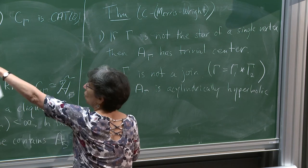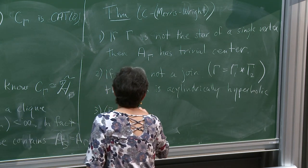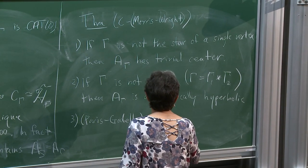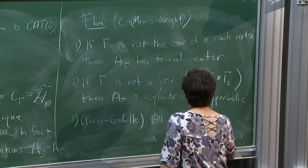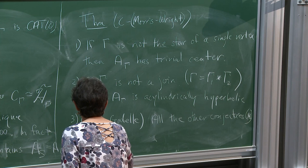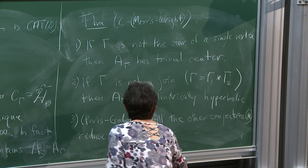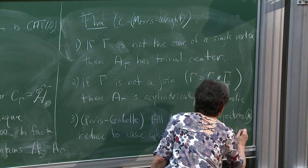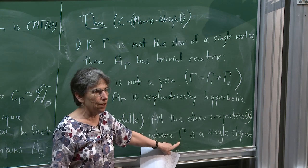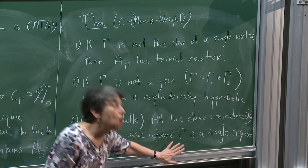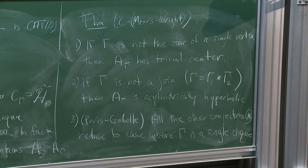And three — already in the Paris and Goodell paper — perhaps most interesting: all of the conjectures on that list, other than the centralizer one, reduce to the case where γ is a single clique. So if we could deal with the case where γ is a single clique, we would know the conjectures were true for everything.